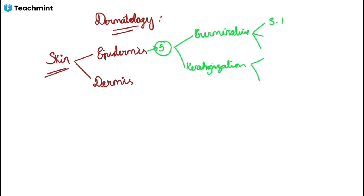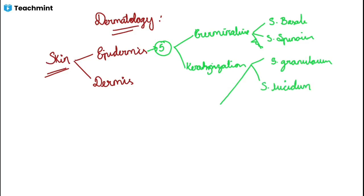The innermost layer is stratum basale, next to it is stratum spinosum — these two belong to the germinative division. In case of keratinization, we have three layers: stratum granulosum, next comes stratum lucidum, and stratum corneum. So these two layers are mainly associated with germinative function, and the remaining layers are associated with keratinization function.